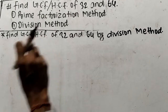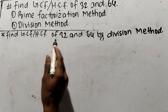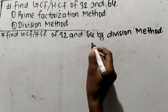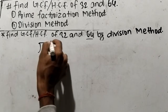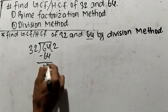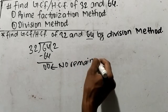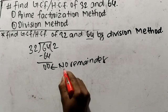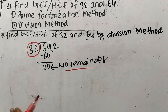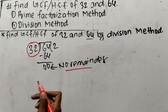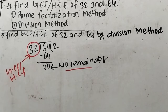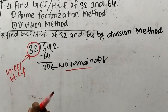Our second method is the division method. So let's find out GCF or HCF of 32 and 64 by division method. First of all we have to divide the greater number, which is 64, by the lesser number, which is 32. So 32 times 2 equals 64, meaning we get no remainder. The divisor which gives no remainder becomes the GCF or HCF. So here 32 gives no remainder, so 32 is the GCF or HCF. In this way we can find out GCF or HCF by division method.